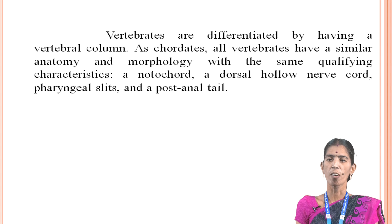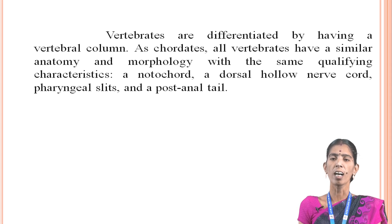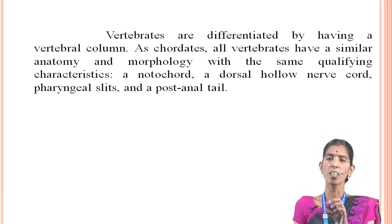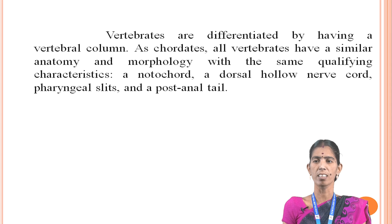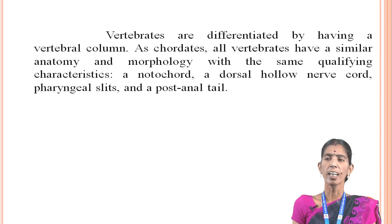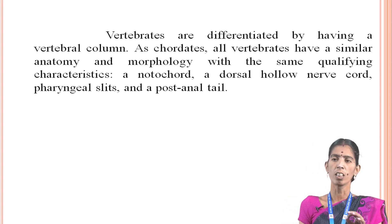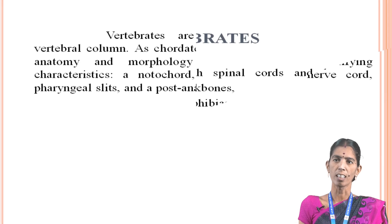All vertebrates have a similar anatomy and morphology with the same qualifying characteristics: a notochord, a dorsal hollow nerve cord, pharyngeal slits, and a post-anal tail.